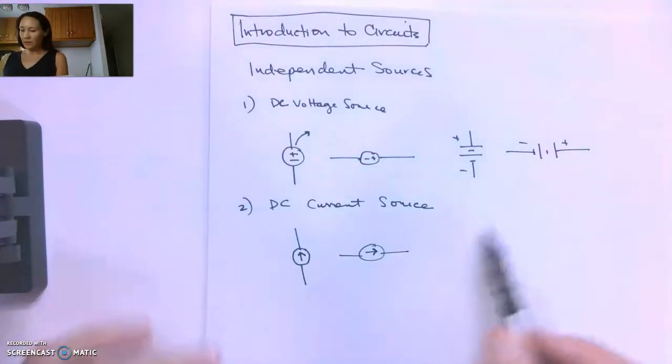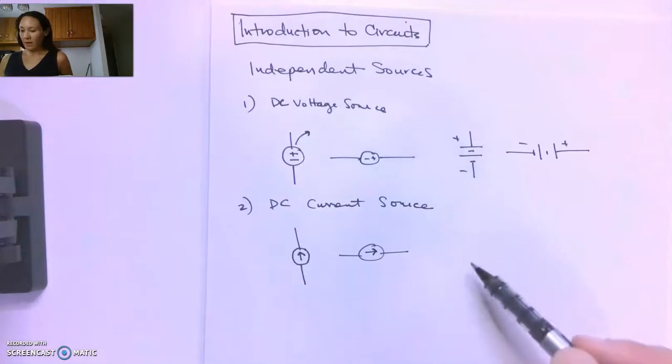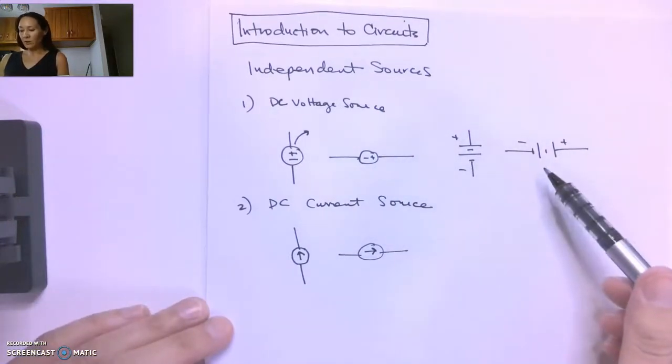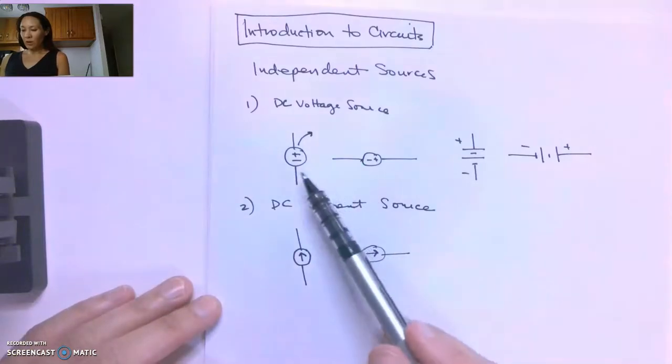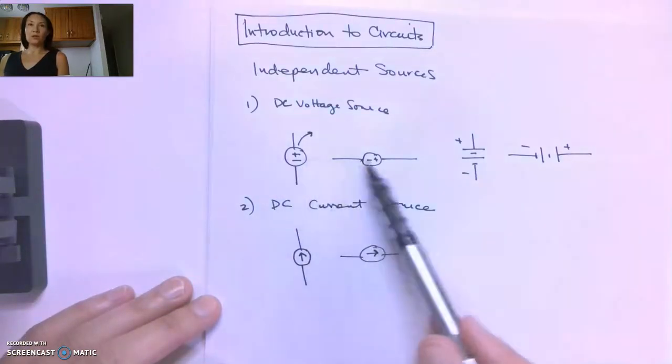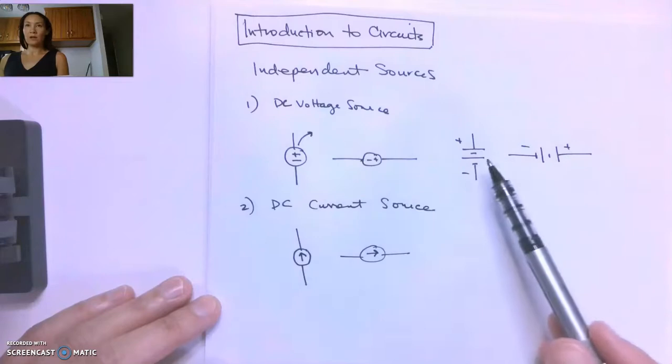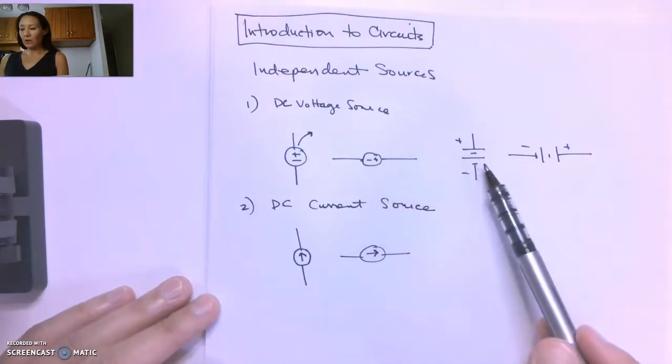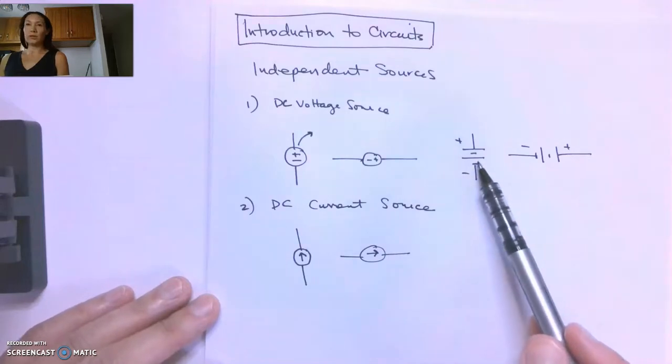This one doesn't have a similar DC representation like the voltage source, and actually we'll probably use the ones with a circle more often than the batteries because these are more general. The battery symbol is usually used for a DC battery.